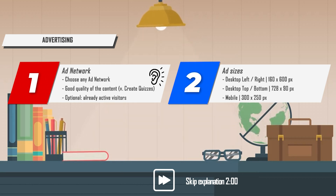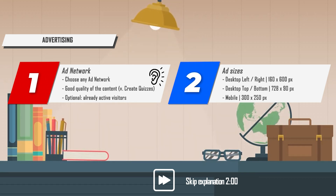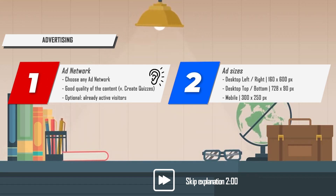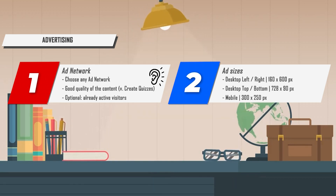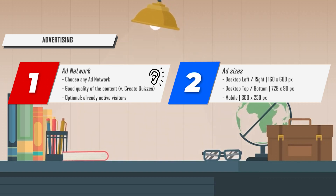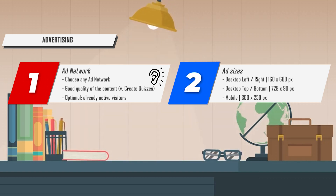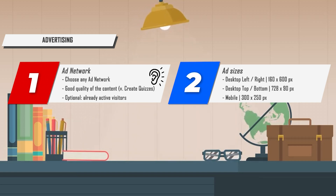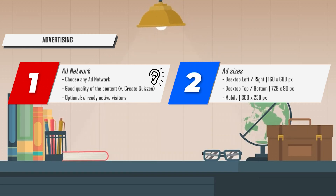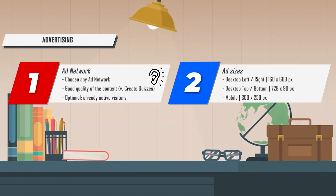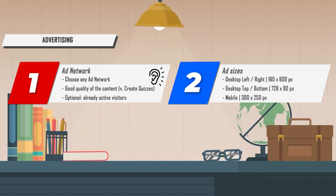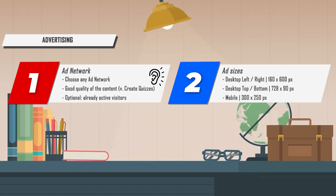Basically you can choose any ad network. When choosing the ad network you should always make sure that the provider is a reputable one or has been on the market for a long time. Google Ads is the best known advertising network, but there are also many other good advertising networks which you can choose. I've created a small list of advertising networks in the description.